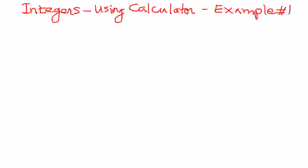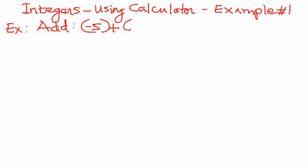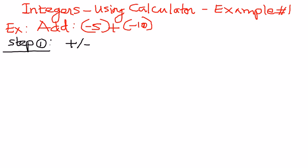Let us say we have an example of this kind. We want to add negative 5 plus negative 10. Using any simple calculator, if it has the required features, you should be able to do it. You have a positive/negative button, and if you enter that and then enter 5, the calculator will return negative 5.